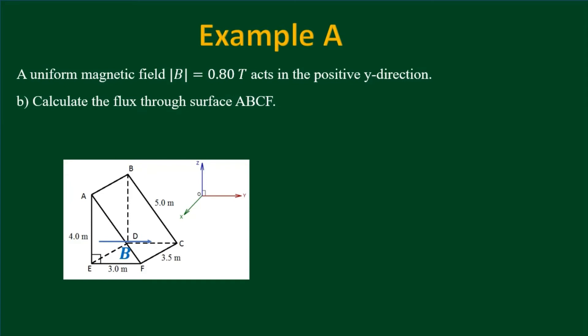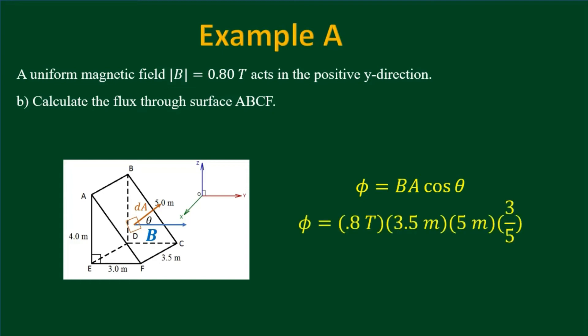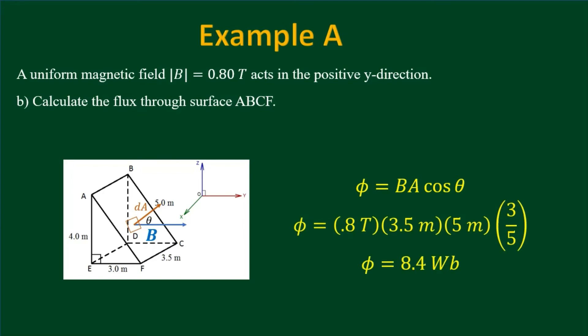Part B: Find the flux through surface ABCF, the lateral surface of what is a right triangular prism. Again, the area vector comes perpendicularly out of the surface, and flux equals BA cosine θ. I don't know theta exactly, but using geometry I know cosine θ equals three-fifths. Plugging in the numbers gives an answer of 8.4 Webers.